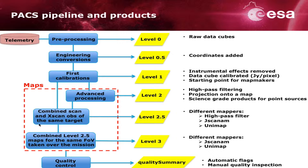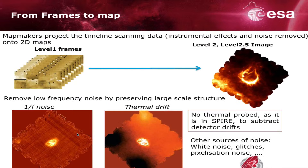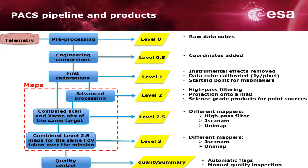By combining the observing strategies of having scan and cross-scan observations — so combining two different observations — we have Level 2.5 products. At this level, we have three different mappers: the high-pass filter, JSCANAM, and Unimap.